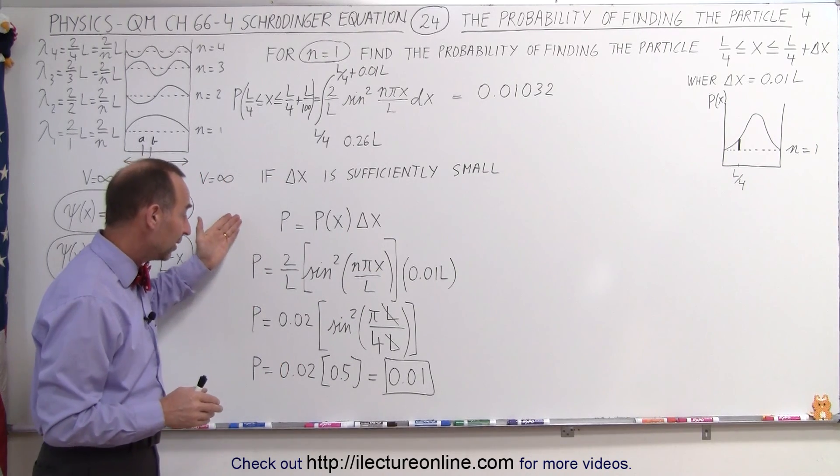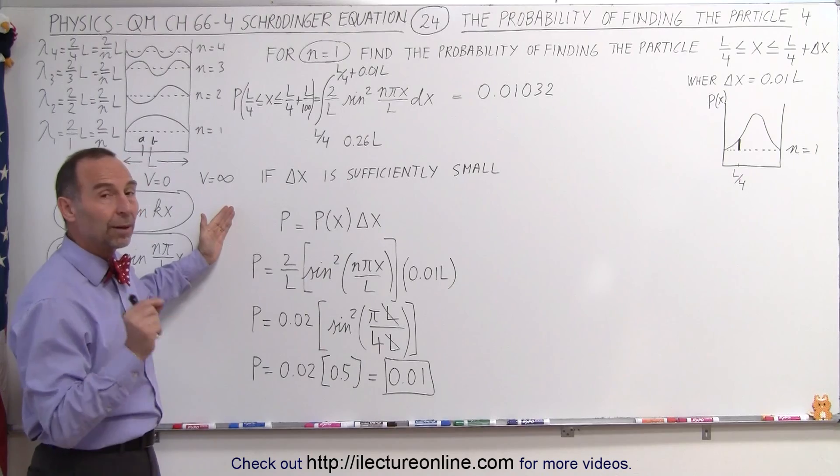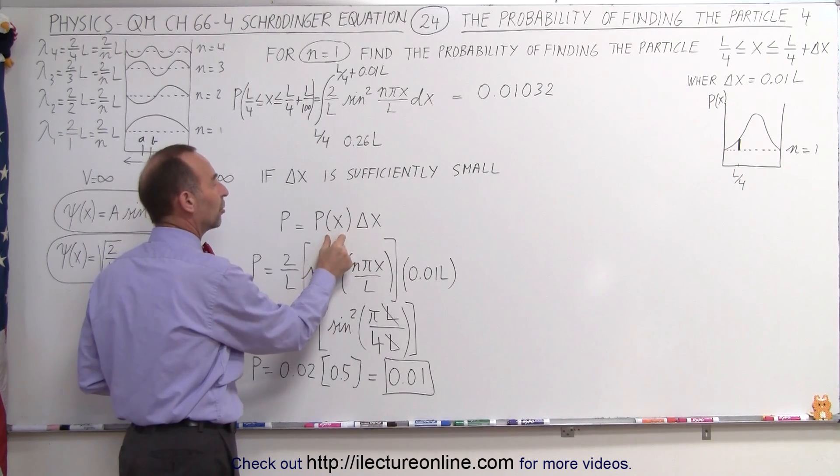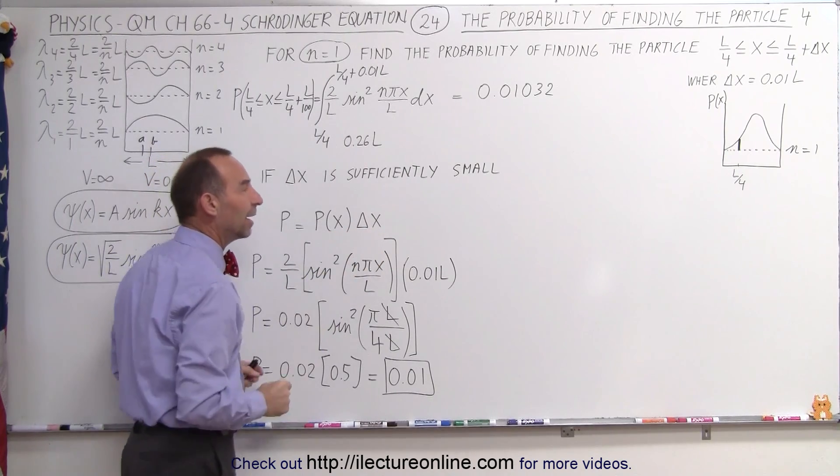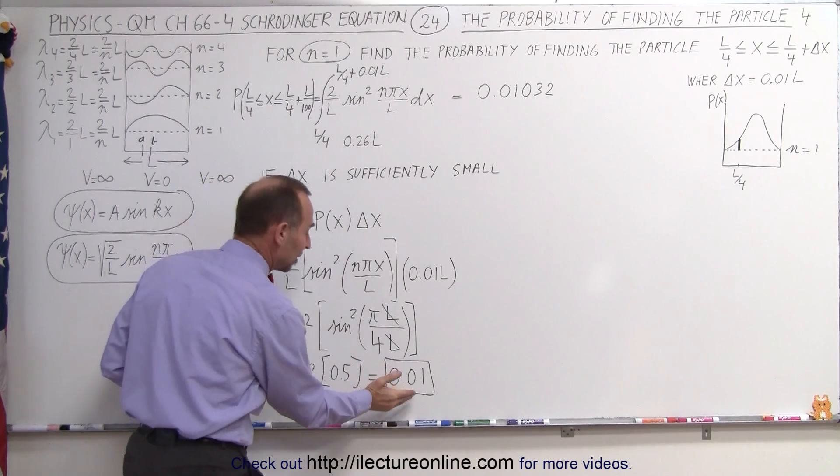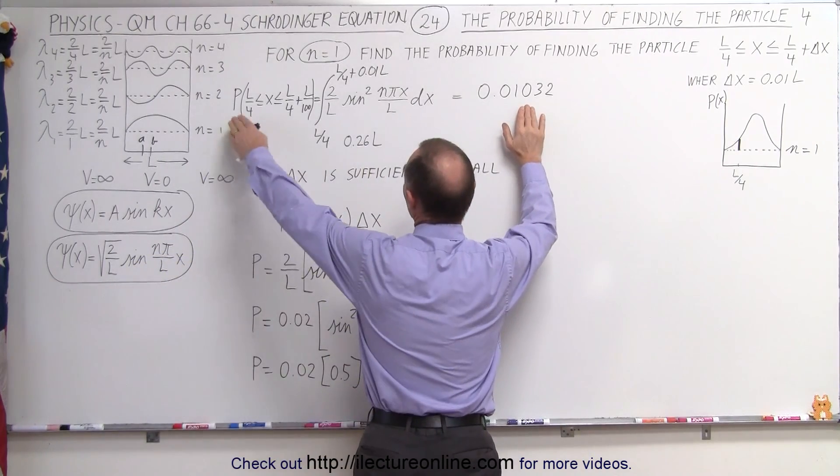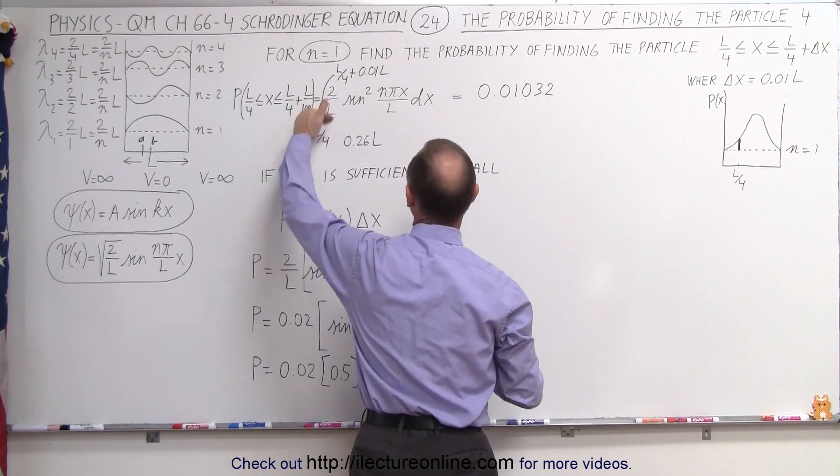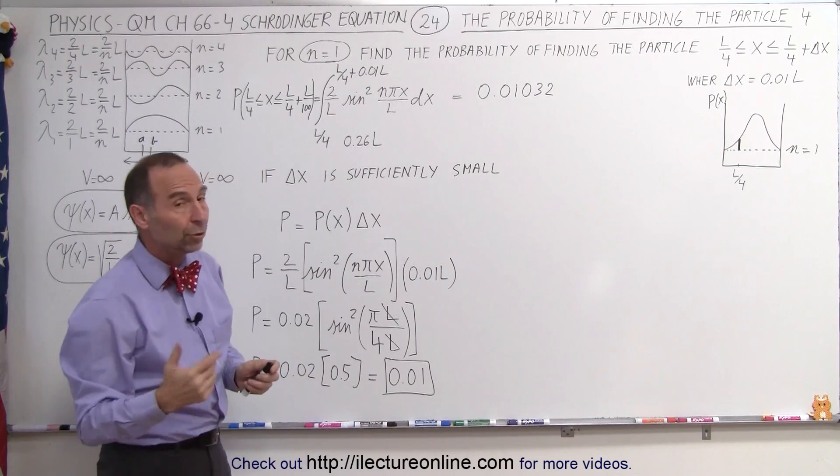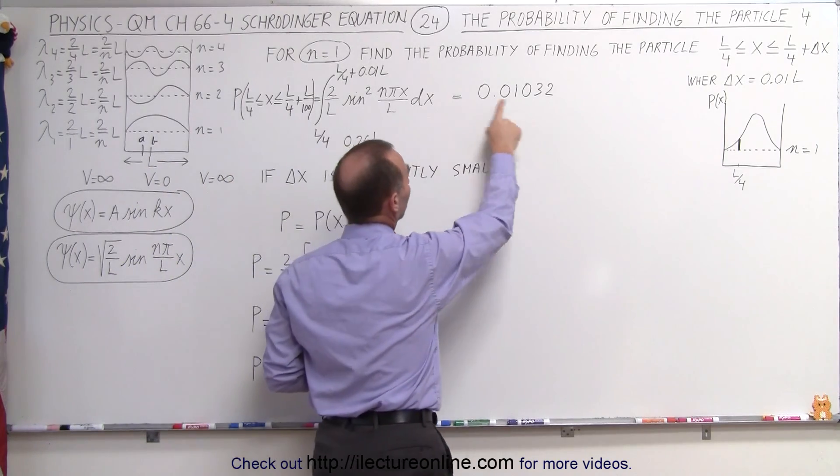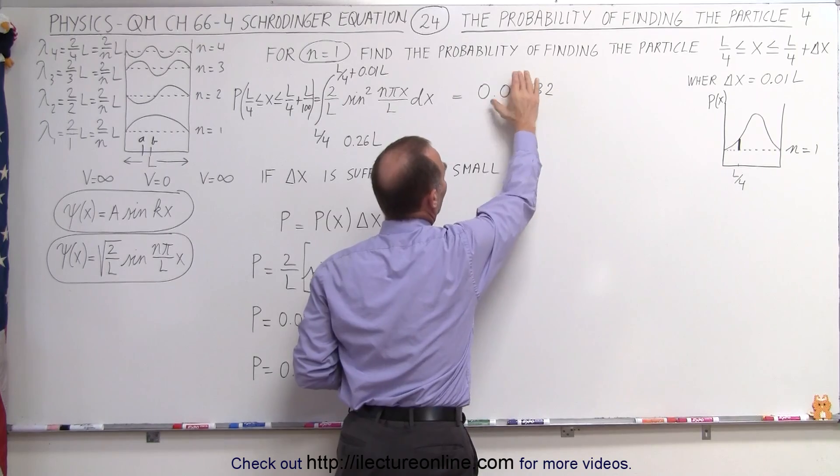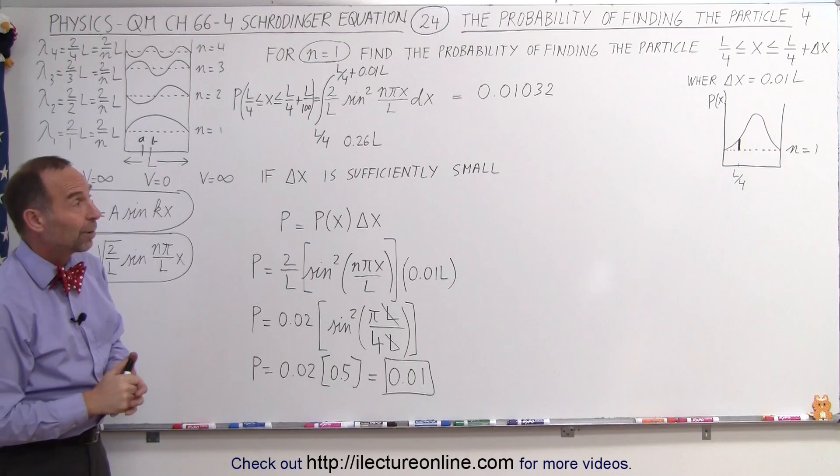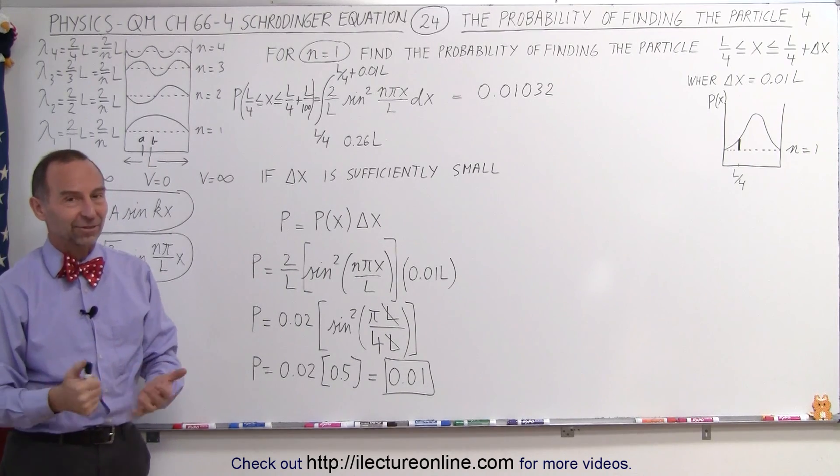So you can see that there's actually quite a slick method to find the probability of finding the particle at any point along its path by simply taking the probability function and multiplying times a very small delta x. When delta x is very small, you get the same result that you would have had if you went ahead and taken the integral of that probability function and then evaluated between the two limits. And again, notice that as delta x goes to 0, this 3, 2 portion disappears and you end up with the exact same result that we got over there. So it's a really good method to find the probability anywhere along its path. And that's how it's done.